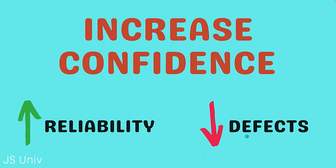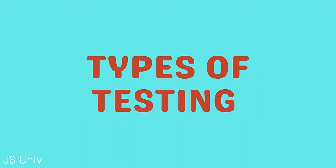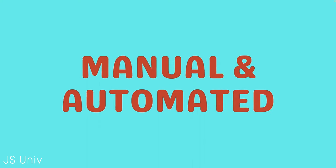We want to increase reliability and decrease defects. In software development, a defect could be a bug. That is exactly why we want to test. In this lecture we learned what testing is and why it's important, but we didn't really learn how we can test our products. So in this section we're going to uncover the different types of testing methodologies. When it comes to testing, there are only two main methodologies: manual testing or automated testing.